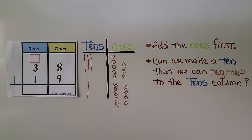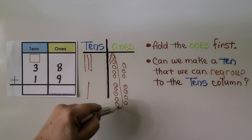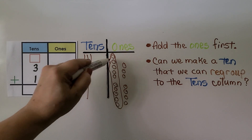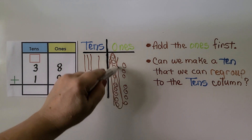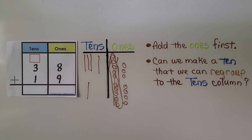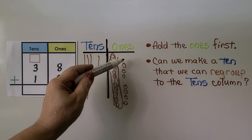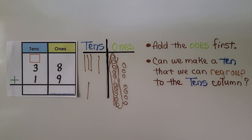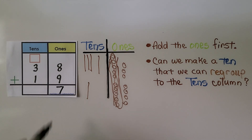Can we make a ten that we can regroup to the tens column? Yes — we have five here and five here, and that makes a ten. We put a ten there and cross those out because we regrouped and moved them to the tens place. Now we count the remaining ones: one, two, three, four, five, six, seven. We put a seven in the ones place.